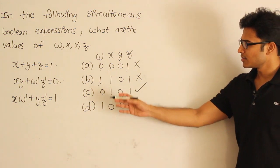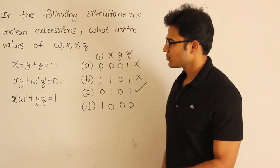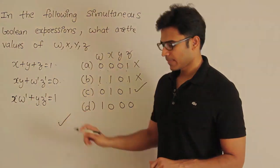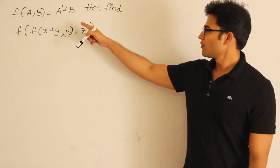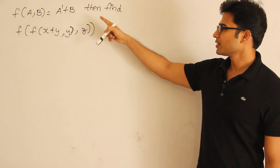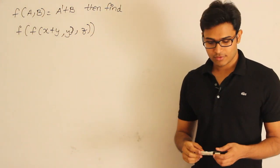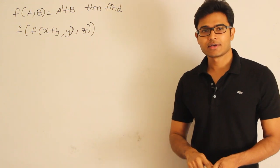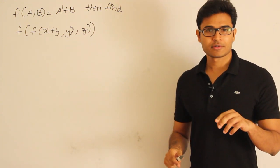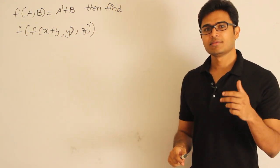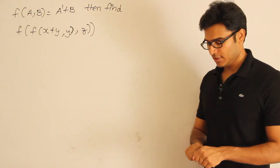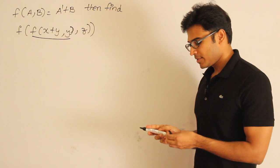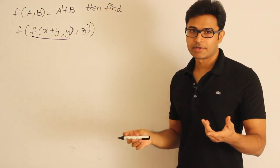For such a question it is very simple — just check whether each equation is satisfied or not. Now the next problem: f(a, b) = a' + b. Find the value of the nested function. Whenever a nested function is given, it is always better to implement the innermost function first and then implement the next level of function.